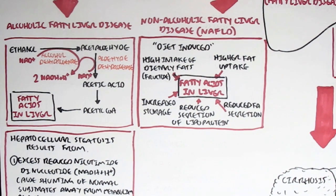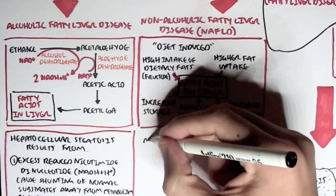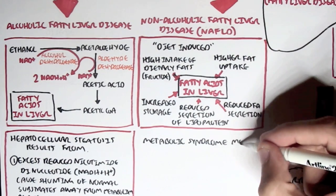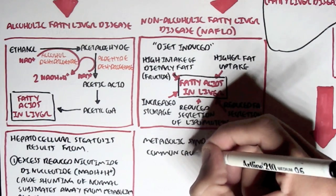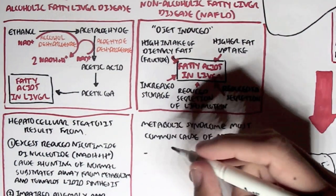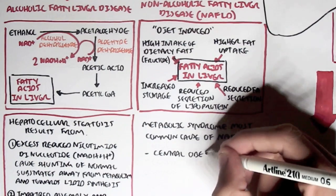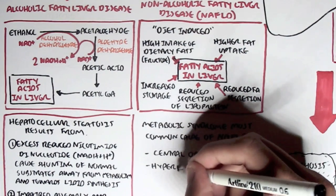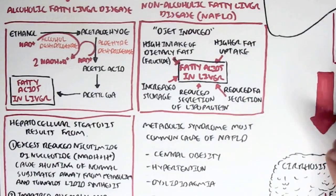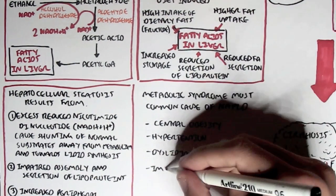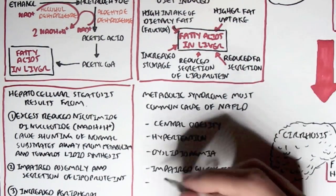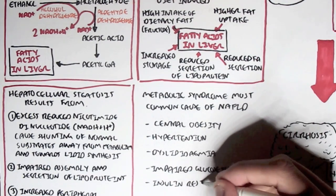Metabolic syndrome is one of the most common causes of non-alcoholic fatty liver disease. Metabolic syndrome is a collective name used to denote a number of serious diseases or health conditions resulting in serious fatty acid accumulation in the liver. These are: central obesity, hypertension, dyslipidemia, impaired glucose tolerance, and insulin resistance. To have metabolic syndrome, you only need 3 out of the 5.